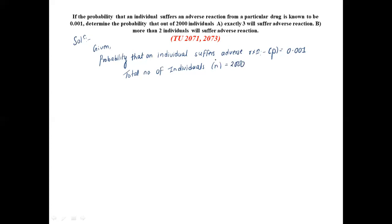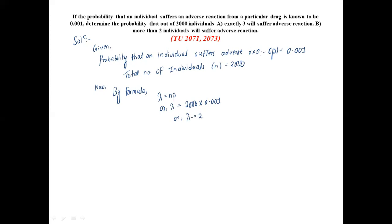Here, n is large and p is very small, and n times p gives a moderate value — this is the condition for applying the Poisson distribution. By the Poisson distribution formula, lambda is equal to n times p. So lambda equals two thousand multiplied by 0.001, which gives us lambda equals two.